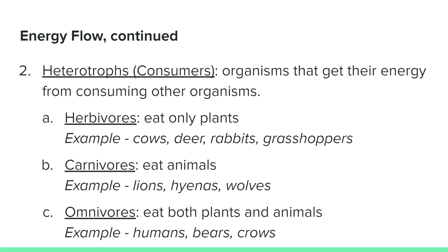Heterotrophs, also called consumers, are organisms that get their energy from consuming other organisms. Herbivores, like cows and deer, only eat plants. Carnivores, like lions and wolves, eat other animals. Omnivores, like humans and bears, eat both plants and animals.